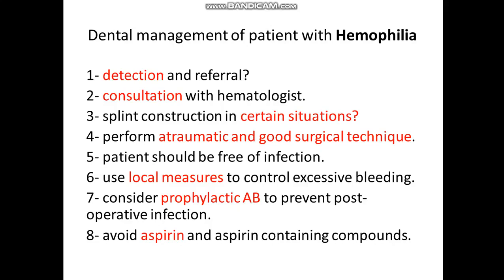Haemophilia can be classified into Haemophilia A and Haemophilia B. Haemophilia A occurs when there is a deficiency in factor 8, while Haemophilia B occurs when there is a deficiency in factor 9, sometimes called Christmas disease.